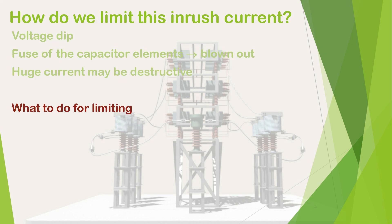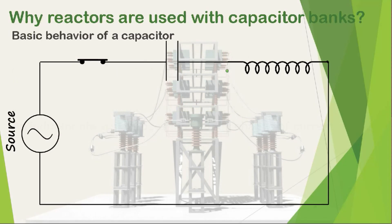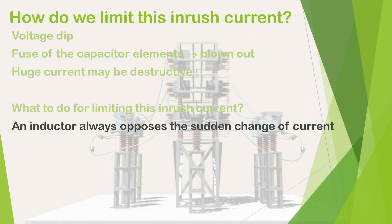To limit this inrush current, we know that an inductor always opposes the sudden change of current in a circuit. So if we put one inductor in series with the capacitor, the inrush current can be reduced. Let me go into a little more detail regarding the behavior of the inrush current and the circuit of the capacitor bank.